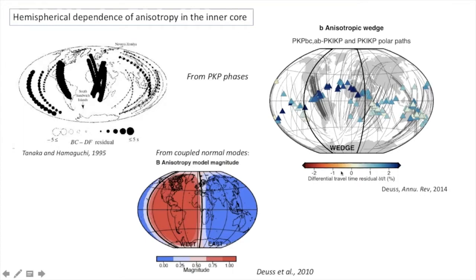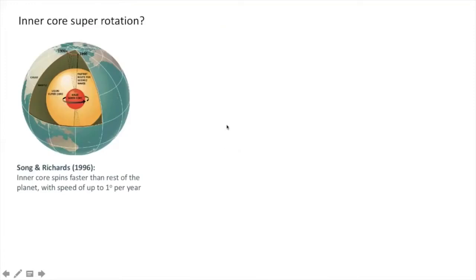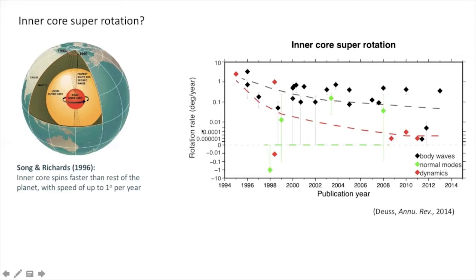A word about the differential rotation of the inner core with respect to the mantle: this was first proposed by Song and Richards in 1996, based on 25 years of PKP data on the same path between the South Sandwich Islands and Alaska, assuming a slightly tilted axis of symmetry of the anisotropy with respect to the Earth's rotation axis. Many studies based on different methods and wave types have attempted to verify this result, which is important for geodynamicists studying the core dynamo and reversals of the geomagnetic field. However, the estimated rotation rate has been questioned and is now settled at much smaller values, if at all, although there are still some disagreements.